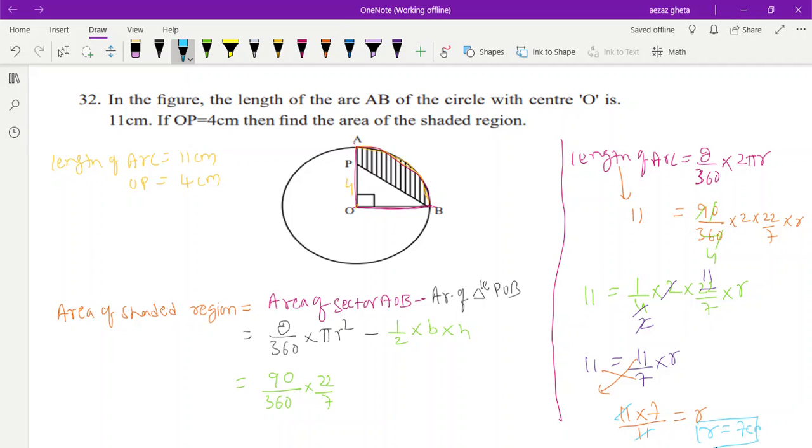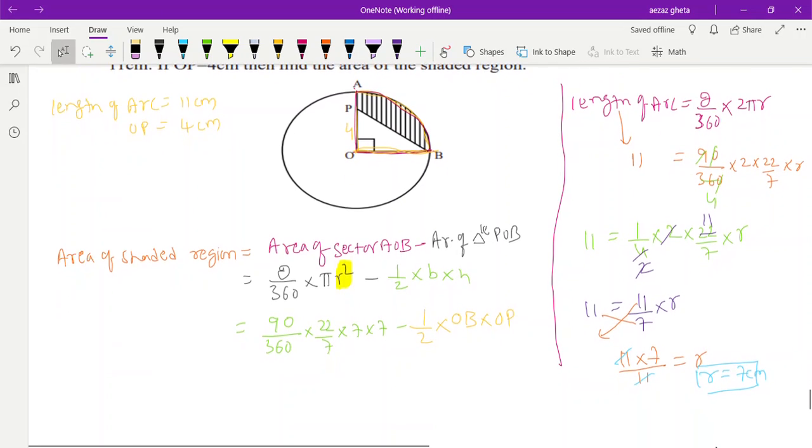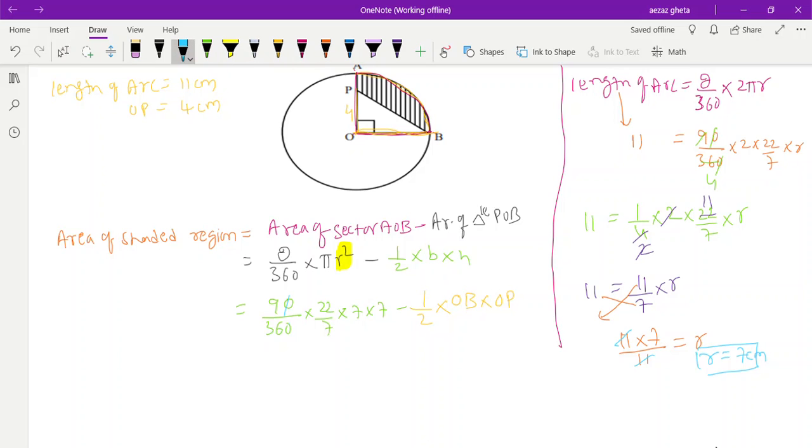So 1/4, 7 into 7. R² is 7², correct, minus half into base. What is the base? OB is the base. What is the height? Your triangle is POB, so don't take OA is the height, only OP which is given to you, is it correct? Now we will cancel: 11 into 7 divided by 2 minus half, OB is radius, radius is 7, OP is the height, height is given 4.